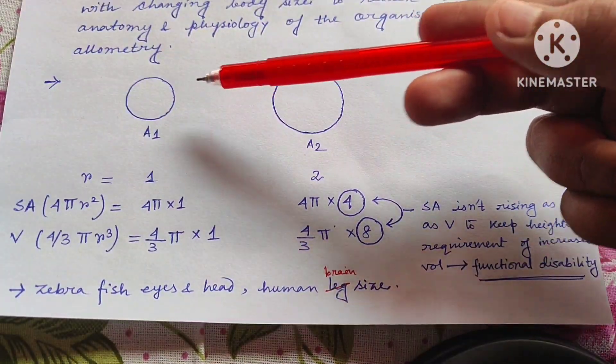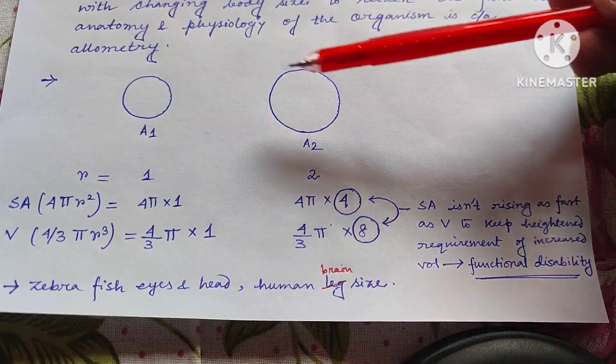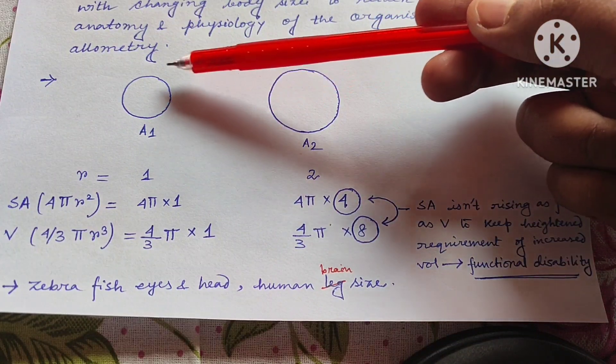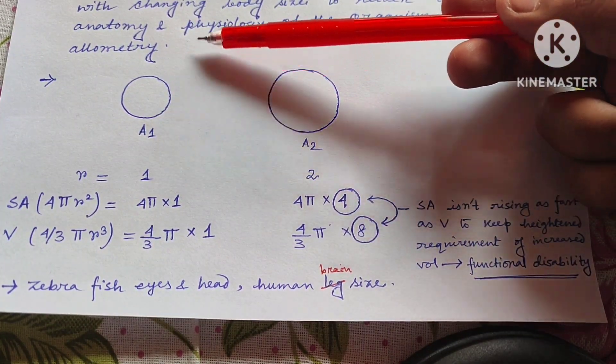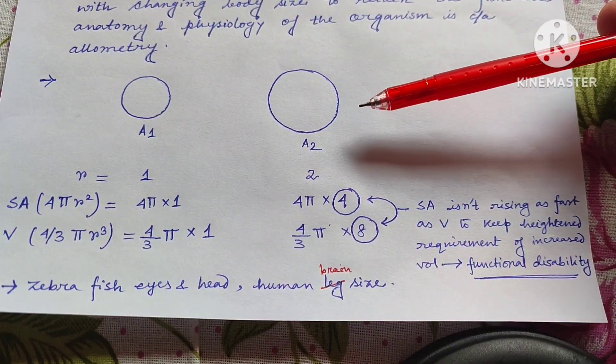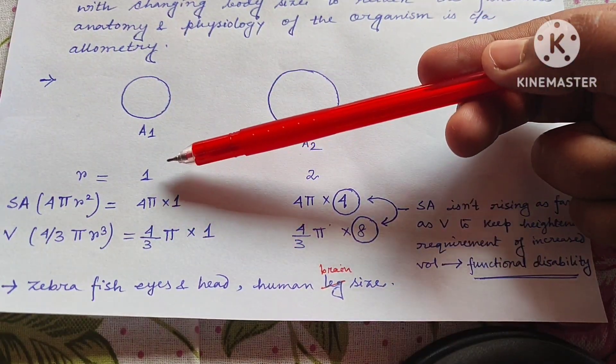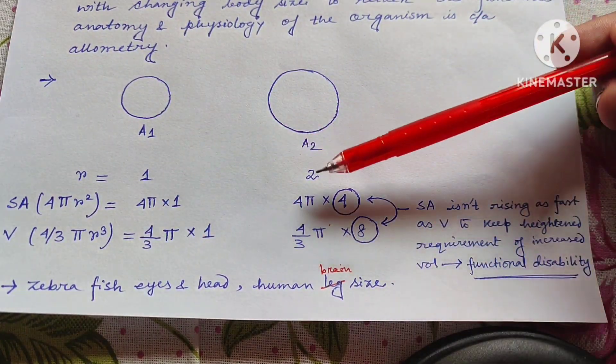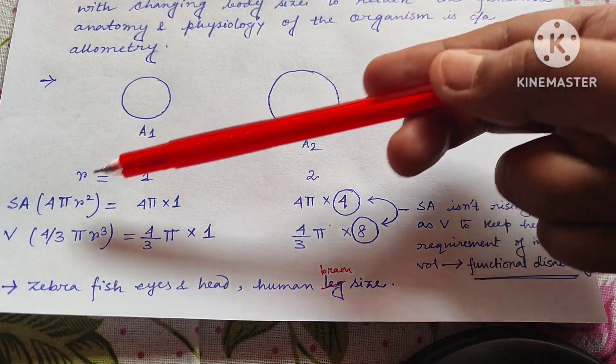Let's see through an example. I have drawn here two spherical animals. This is actually one animal. The animal A1, this spherical animal has absorbed different nutrients and increased its size to A2 size. So in A1 its radius was 1 unit and in A2 condition its radius increases up to 2 unit.